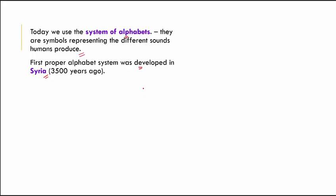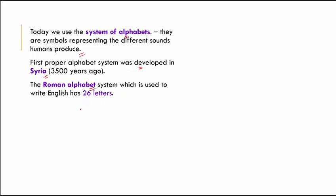In English, the Roman alphabet system is used, and it has 26 letters. Regarding the history of India, the oldest script found in India was from the Indus Valley Civilization, but no one has been fully able to read this script yet — researchers are still working on deciphering the Indus Valley scripts that were discovered.